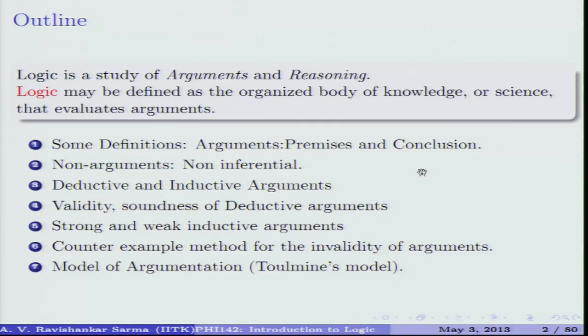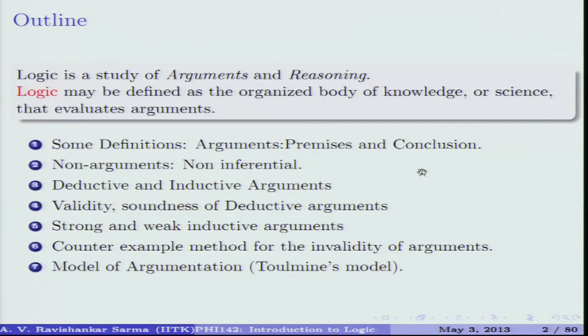One important model of argumentation helps us know when an argument is good or bad. One such model is due to philosopher Stephen Toulmin, who proposed an interesting model of argumentation. We will discuss his model at the end of this part of the course.